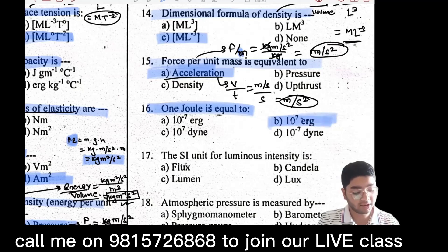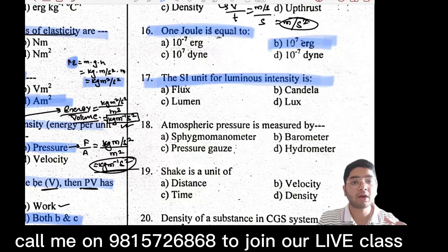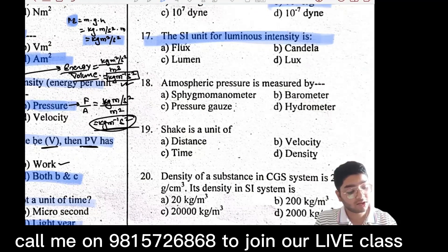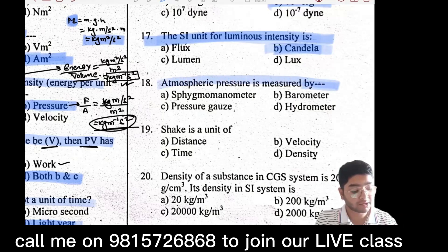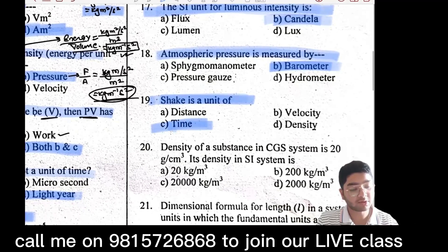The SI unit of luminous intensity is candela. Atmospheric pressure is measured by a barometer. A sheik is a unit of time — sheik means time.